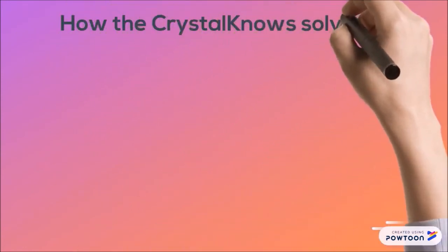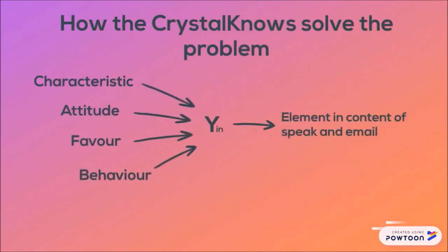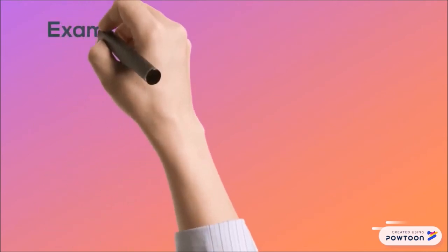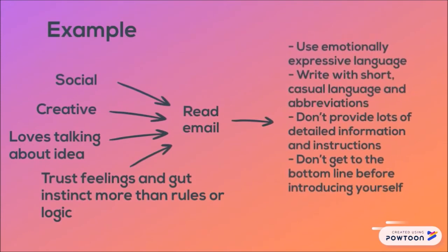Crystal Knows solves the problem by taking the input which are characteristics, attitude, behavior and personality traits. Through the activation function, Crystal Knows generates the output which determines the elements of speech and email content. For example, given inputs such as social, creative, loves talking about ideas, trust-building, and guided more by instinct than rules of logic as characteristics of a person, Crystal Knows will generate the output: write emails using emotionally expressive language, write with short casual language and abbreviations. Don't provide a lot of detailed information and instructions, and don't get to the bottom line before establishing yourself.